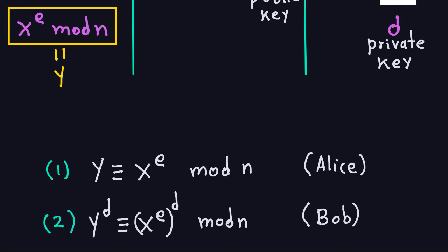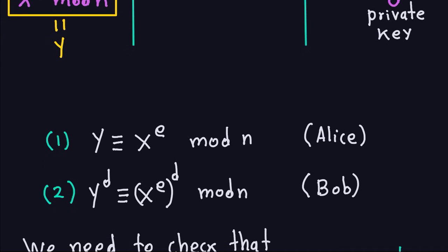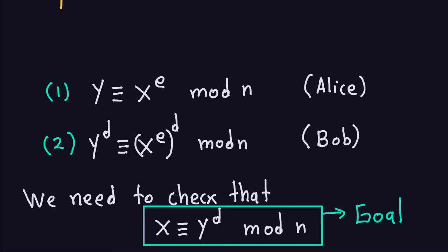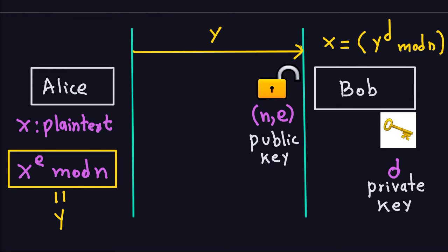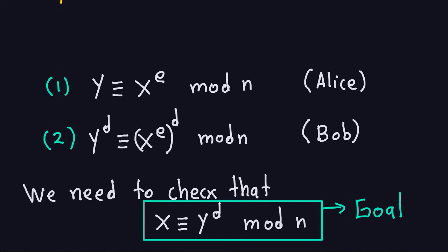Now remember, Bob is going to take the D power of Y — basically taking the D power of this expression. It is not difficult to prove that if you take the D power of a congruence, it is still a congruence modulo N. So we have equations 1 and 2. What we need to check in reality is that X is congruent to Y to the D modulo N, which is exactly what is happening here — when Bob takes the D power of Y and then modulo N, he gets back X. This is our goal, and we'll prove it using the properties of N, D, and E.